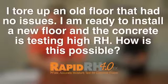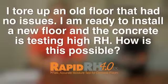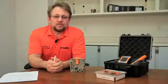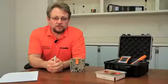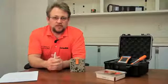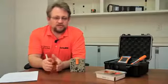I just tore up a floor that had no issues. It was adhered to the concrete fine. Now I'm getting ready to install the new flooring and the concrete is testing high RH percentages. How is that possible? What I usually tell people is that I've seen some of the worst failures on old slabs where the finished floor product has been down and seemed to be perfectly fine.